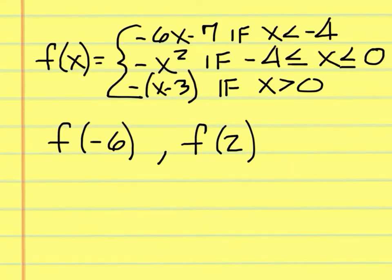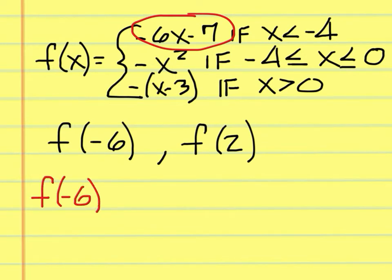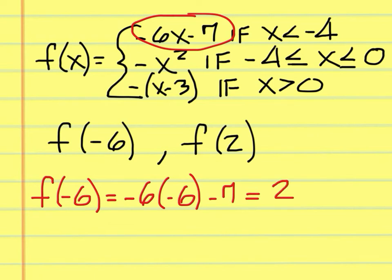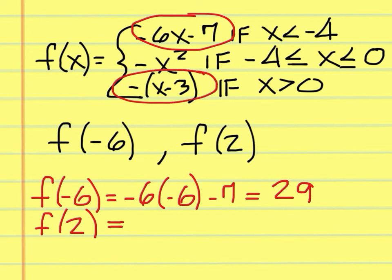On this problem we start with f of negative 6. f of negative 6 falls into the first function because it's less than negative 4. So f of negative 6 equals negative 6 times negative 6 minus 7, which is 36 minus 7, giving 29. For f of 2, since 2 is greater than 0 it falls into the next category: negative quantity of 2 minus 3, that's negative negative 1, so the answer is 1.